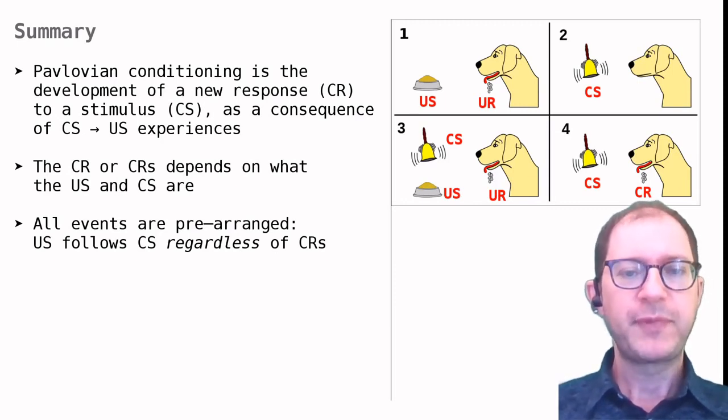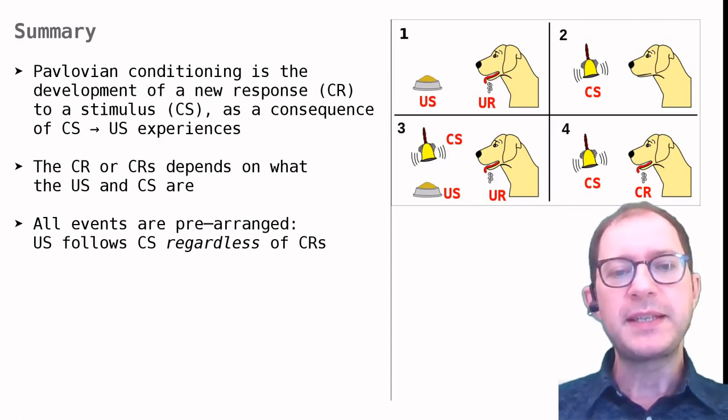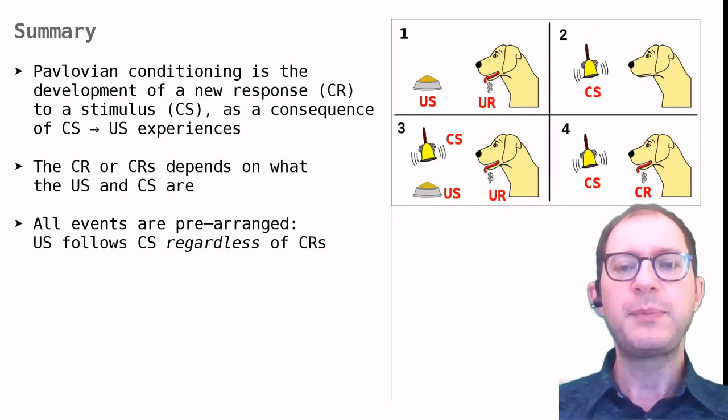To this, I would like to add two things. The first is that the CR depends on the CS, the US and the animal. If we use sound and food, dogs will typically salivate, wag their tails, or approach the food location, and so on. If we use different stimuli, or a different animal, things will be different, as we have seen before in our examples. However, we cannot decide what the CR will be. We cannot decide, for example, to have the dog sit or roll when it would normally salivate. These behaviors, sitting and rolling, can be trained, but not with Pavlovian conditioning. In Pavlovian conditioning, it is the animal that decides, so to speak, what the appropriate CR is to a given CS and US.